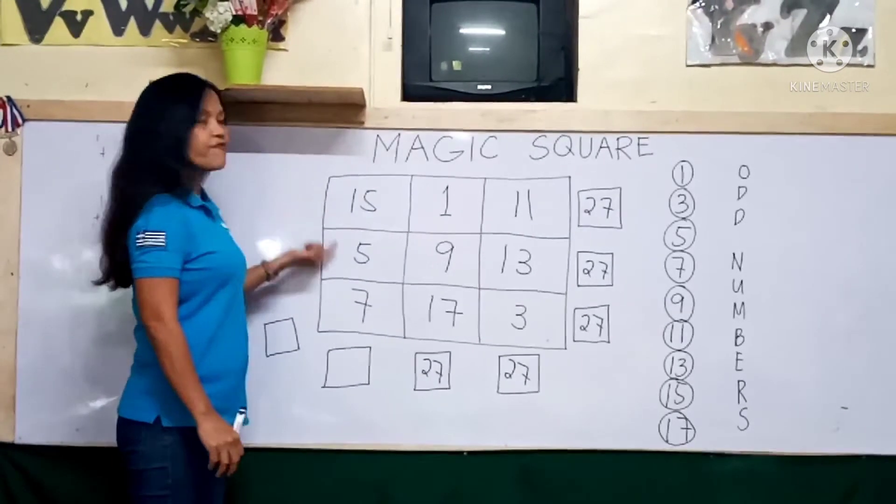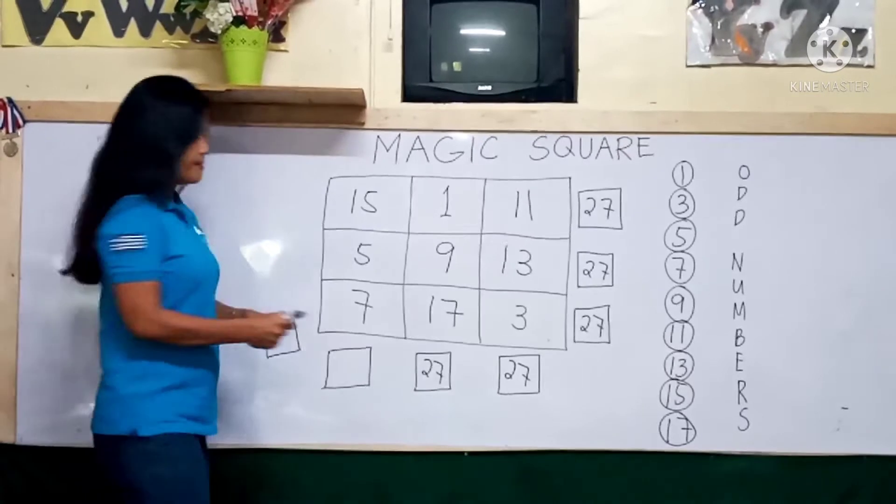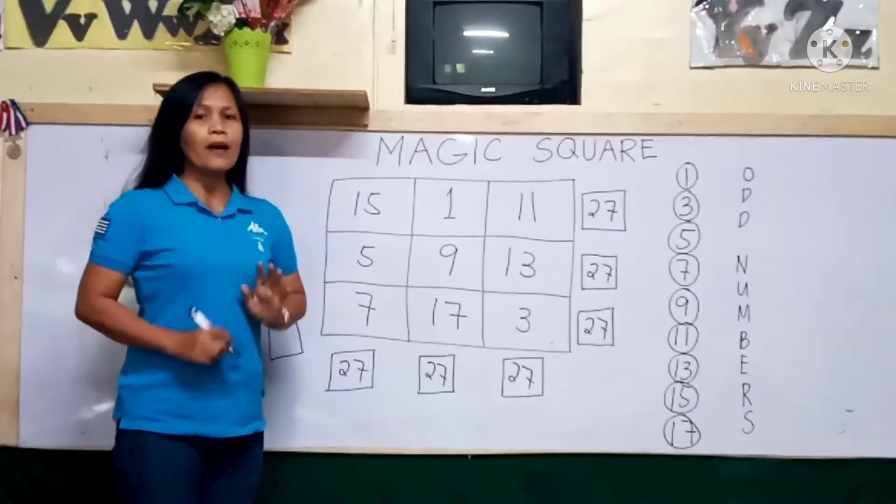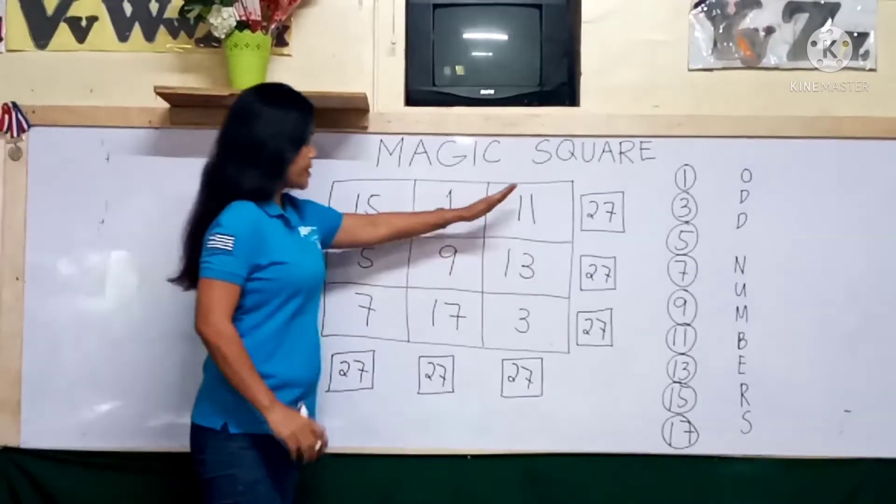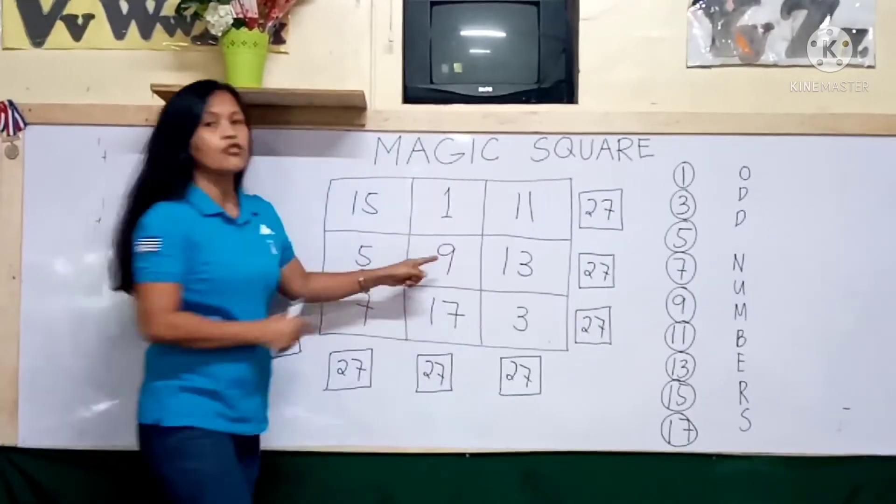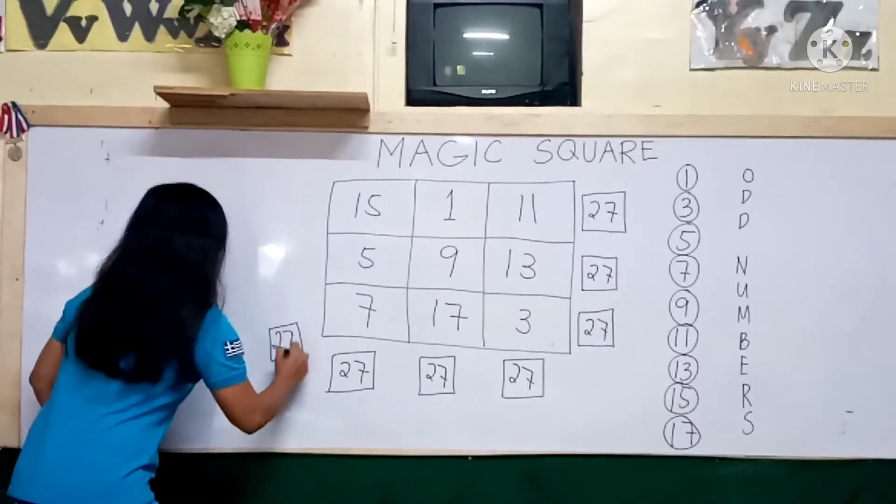15 plus 5, 20, and then 7, 27. Now, how about the diagonal sum of these numbers? 11 plus 9, 20, plus 7, it's 27.